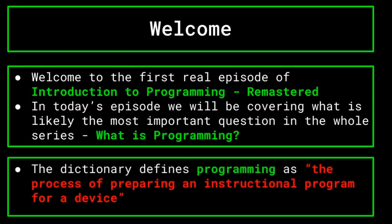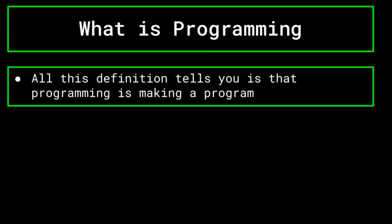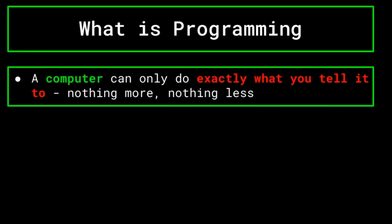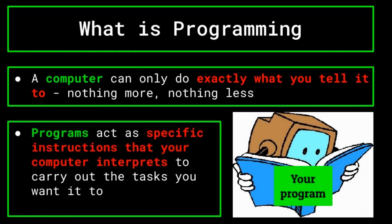The dictionary defines programming as the process of preparing an instructional program for a device. In all seriousness, that definition doesn't really mean much, nor does it do justice to the many intricacies of programming. So programming is making a program — so what? To better understand this, let's work with an analogy.